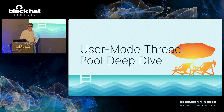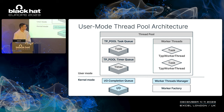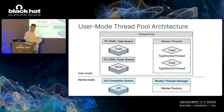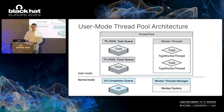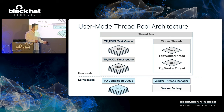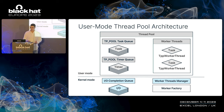With that in mind, let's take a swim in the thread pool, starting from its architecture. The thread pool comprises three distinct work queues, each dedicated for a different type of work item. The queues include a task queue, a timer queue, and an IO completion queue residing in the kernel. The worker threads operate on the different queues to dequeue work items and execute them. Lastly, the thread pool contains a worker threads manager, called the worker factory object, which is responsible for managing the worker threads.